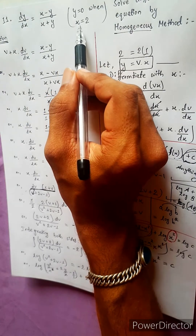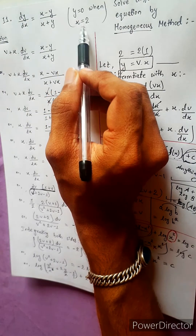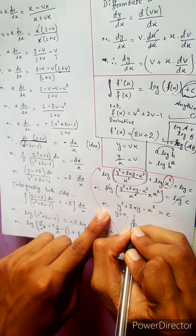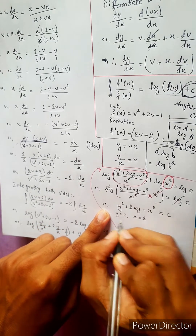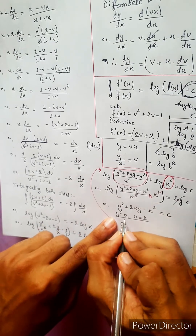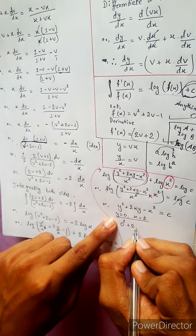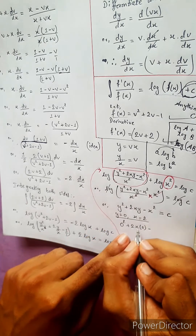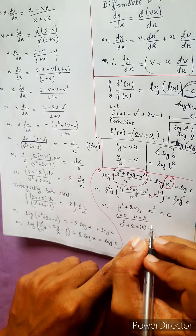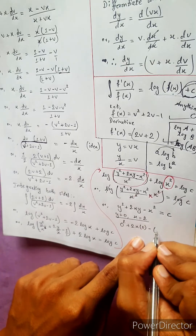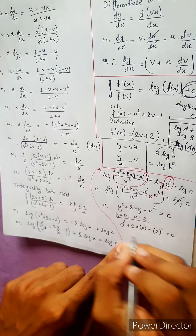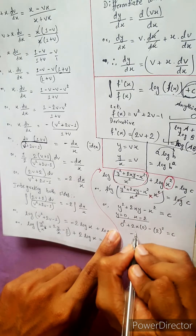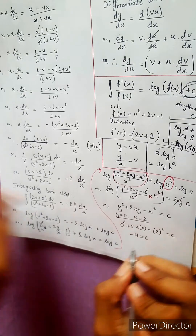Apply the initial condition: y equals 0 when x equals 2. Substituting into y² plus 2xy minus x² equals c: 0² plus 2(2)(0) minus 2² equals c, which gives 0 plus 0 minus 4 equals c, so c equals minus 4.